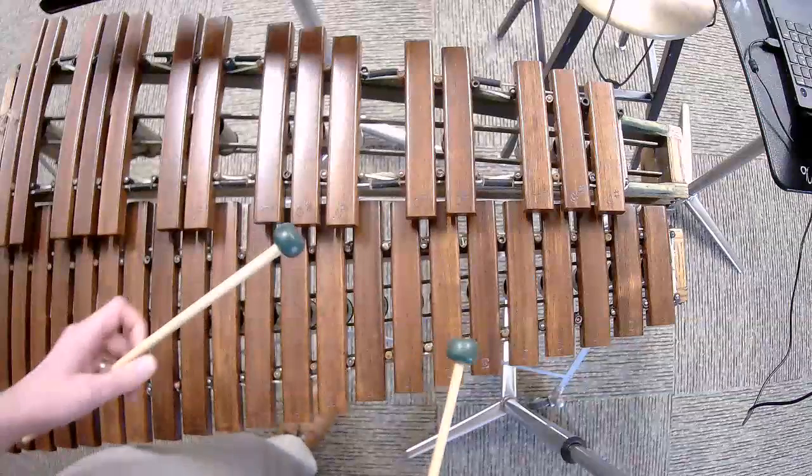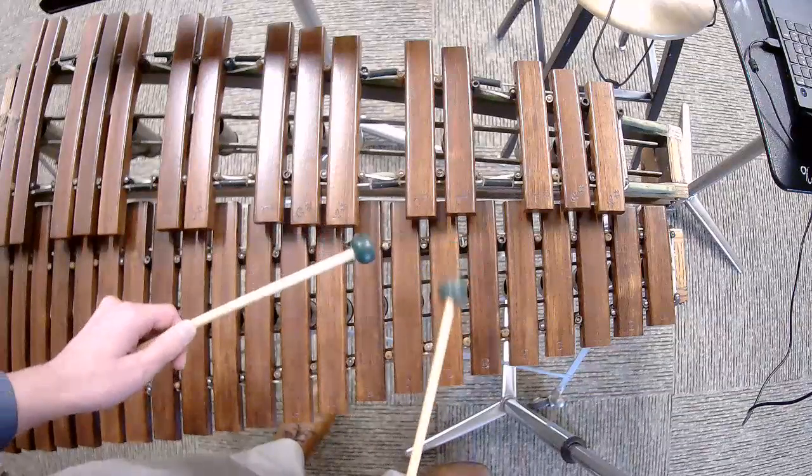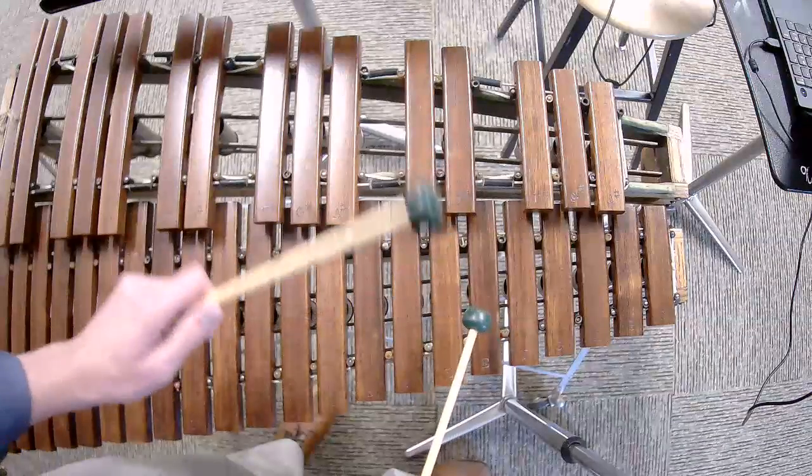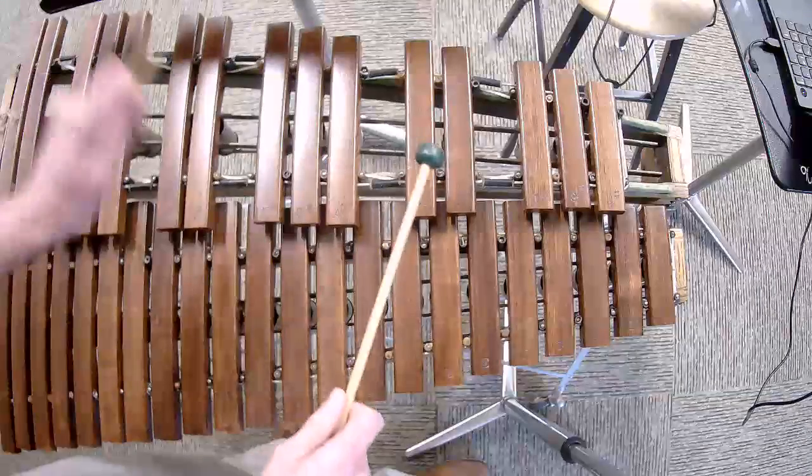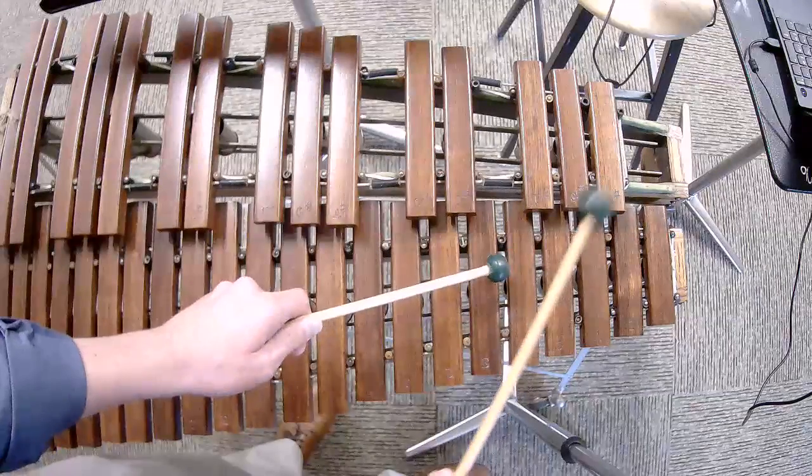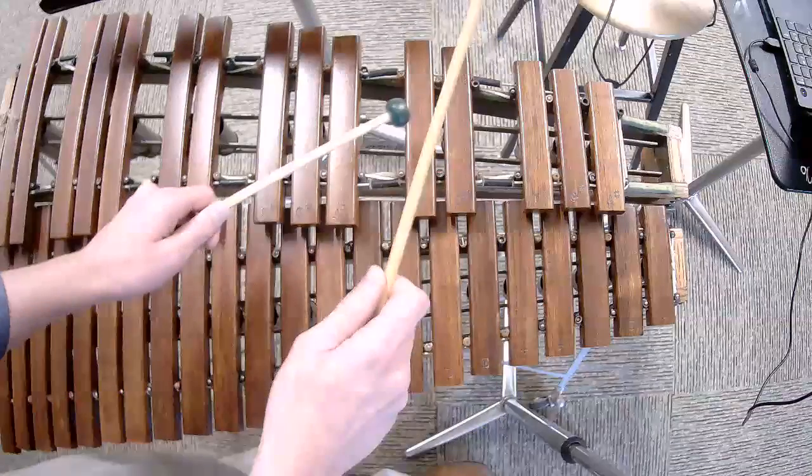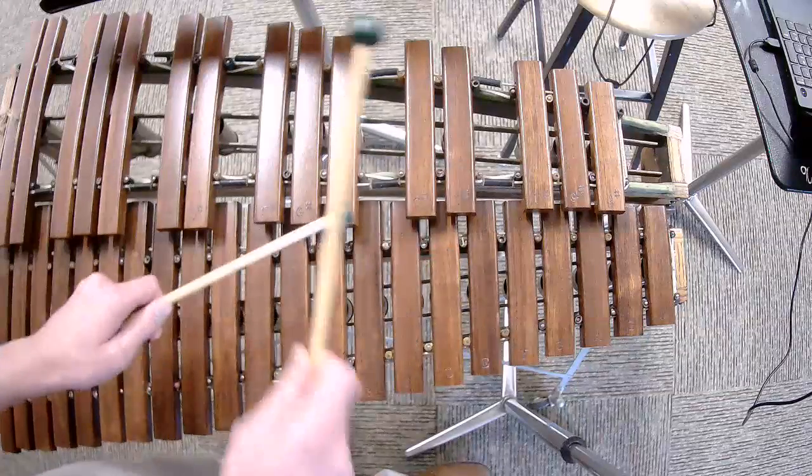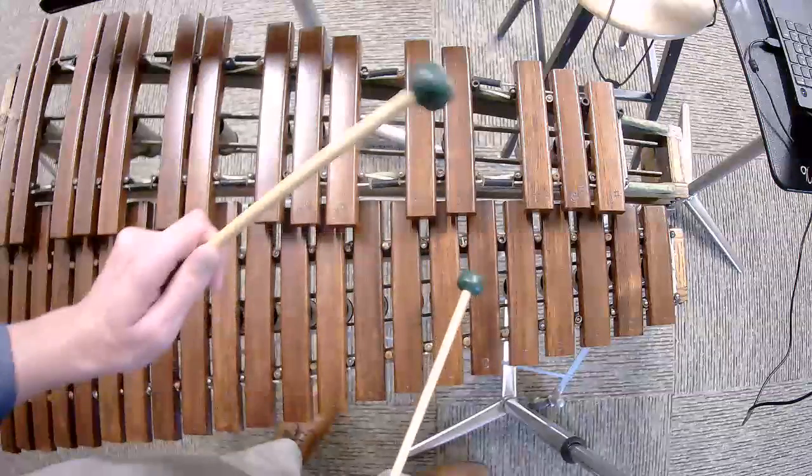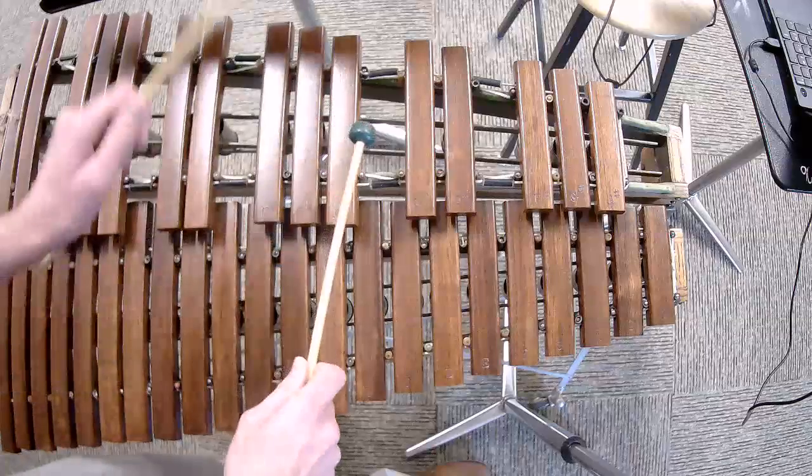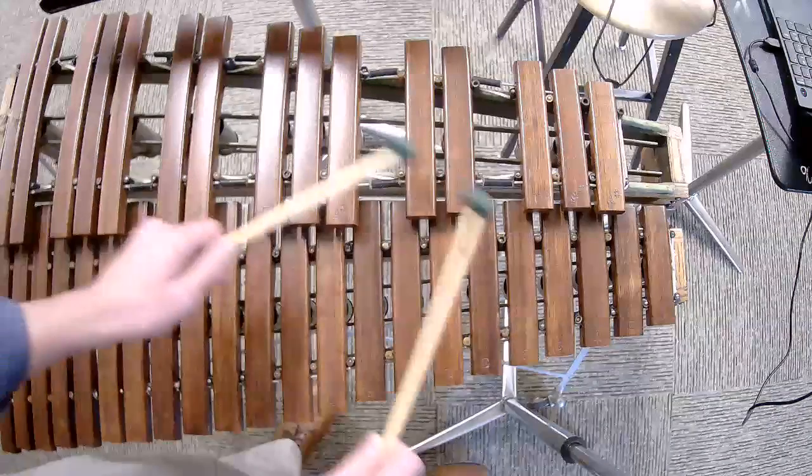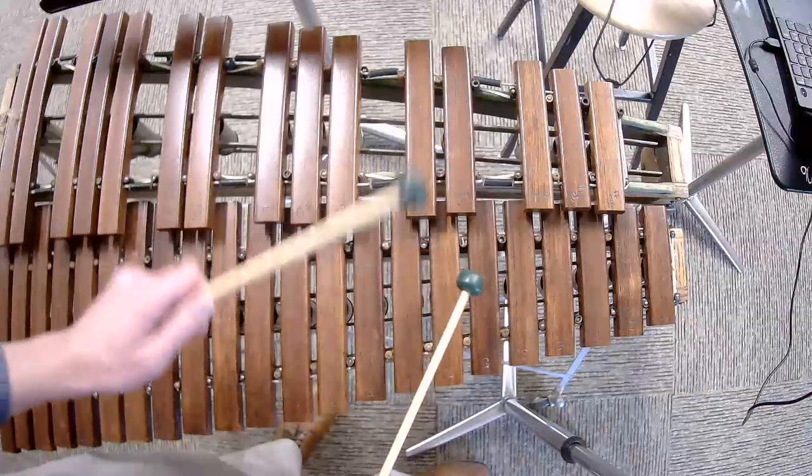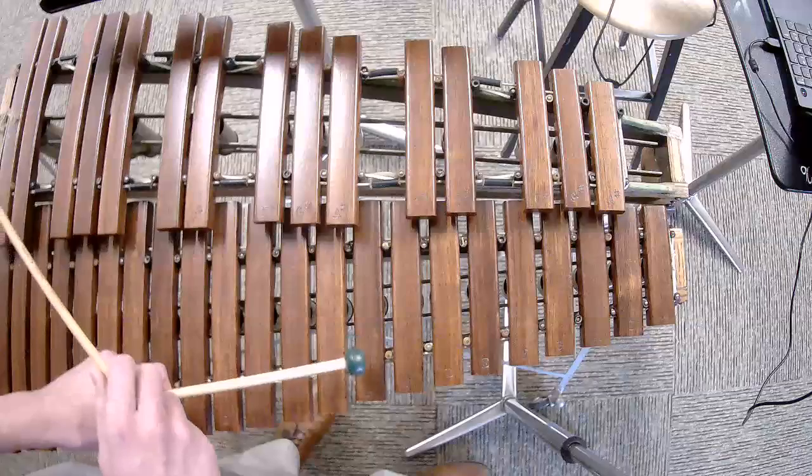Let's say note names while shadow playing about these. Two, nice and slow. And go. D, D, C, C, B flat, B flat. Moving up. F, F, E flat, E flat, D, C, B flat. Repeat. D, D, C, C, B flat, B flat. Moving up. F, F, E flat, E flat, D, C, B flat.